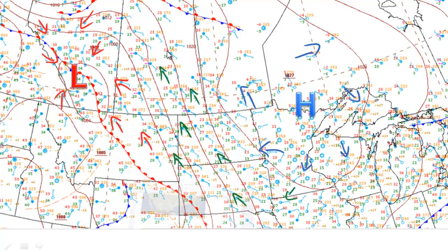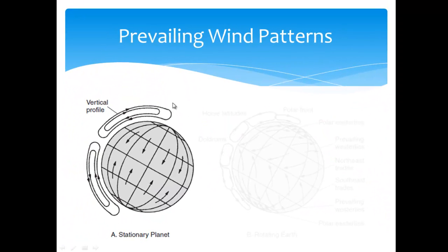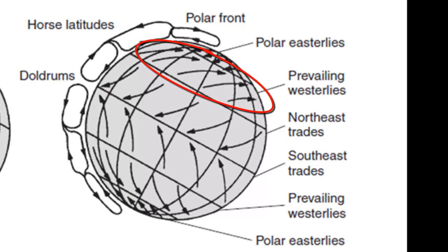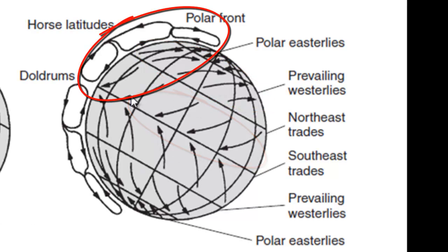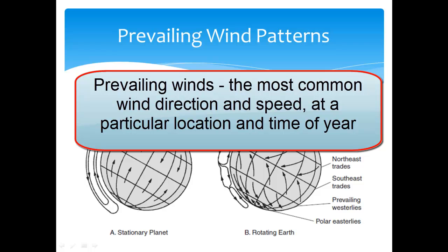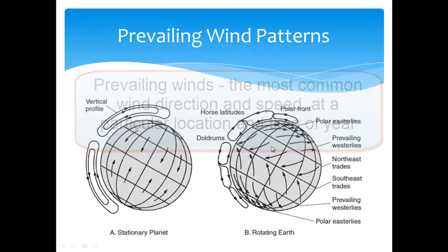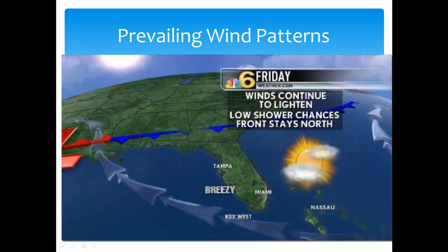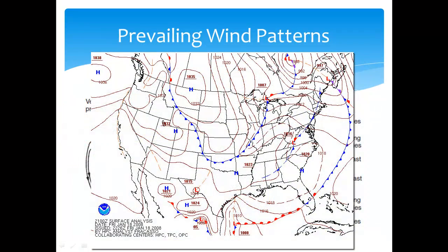So how does all of this pull together into an understanding of global weather patterns? If earth didn't spin, wind patterns would be simpler, as you see in the diagram on the left. However, due to earth's rotation and the Coriolis effect, winds appear to curve, as you see in the diagram on the right. This results in prevailing winds from the west and east, and several convection cells in each hemisphere. Prevailing winds refer to the most common wind direction and speed at a particular location and time of year. In Louisiana, our prevailing winds in the summer are south to southeast, and in the other seasons, west to northwest or southwest.